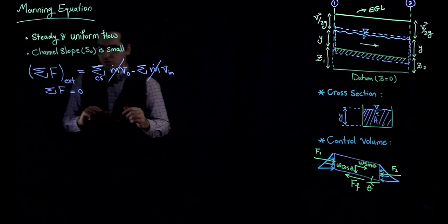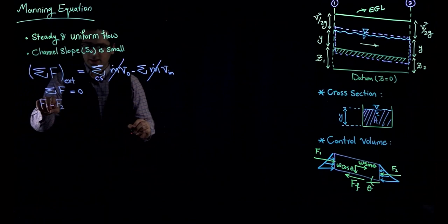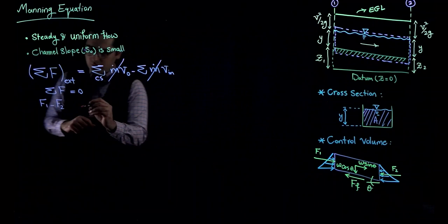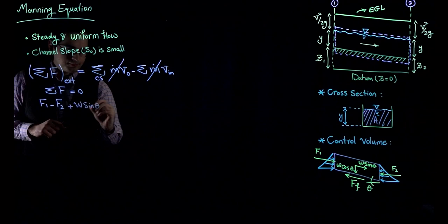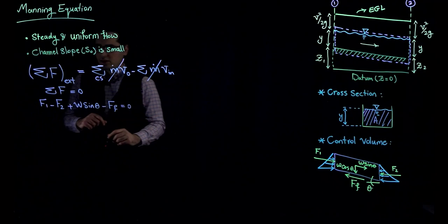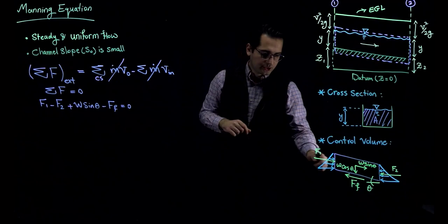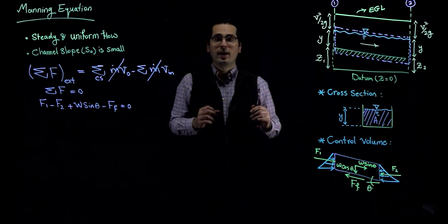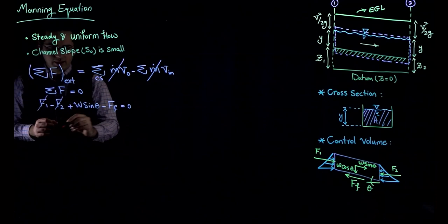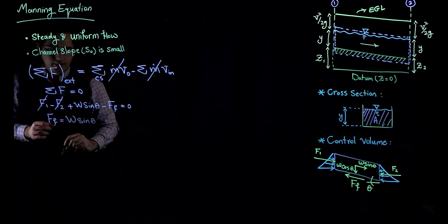Writing down the forces: F1 minus F2 plus W sine of theta minus F sub f equals zero. Notice that F1 and F2 are exactly the same because the depth of water at sections 1 and 2 are identical, so the hydrostatic pressure distribution is the same and the resultant forces cancel each other out. We end up having F sub f equal to W sine of theta.